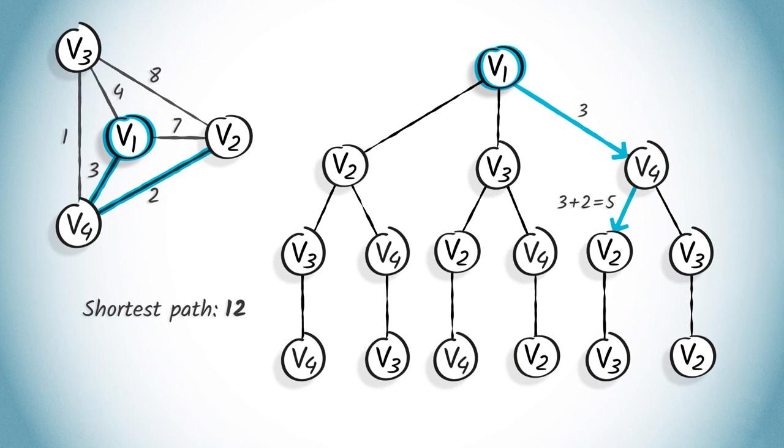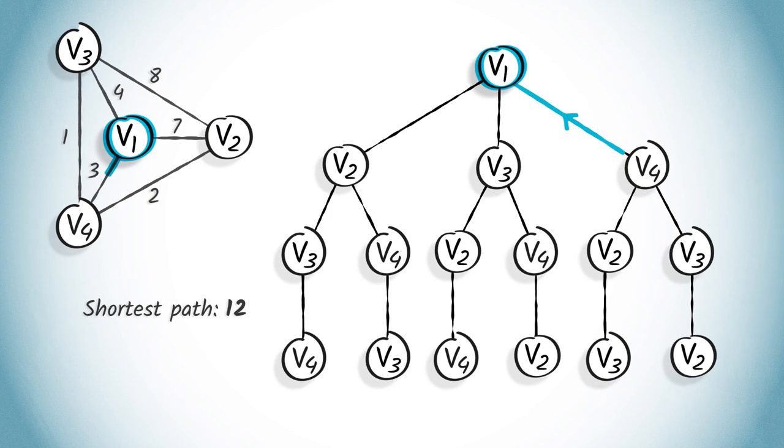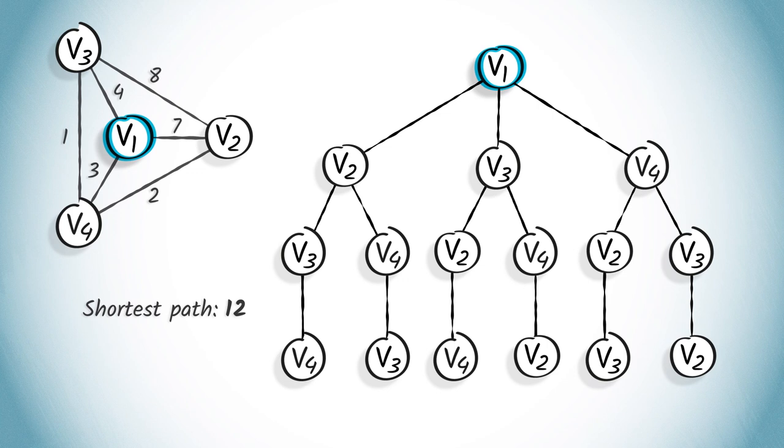There's only one option left, which is to visit V3. However, this move would cost us an additional 8, which would result in a total that's more than our previously found path with a length 12. So, we move backwards instead. We've now explored all the options starting with V1, then V4, so we continue backwards. We now select another option when starting at V1, which is to go to the second nearest neighbor of V1, which is V3.